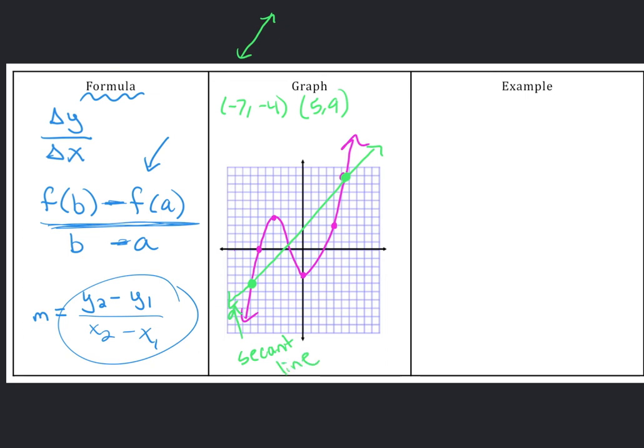And two ways to find that average rate of change. If we're using that formula, change in y. So subtracting those y values, 9 minus negative 4, which is the same as 9 plus 4. And then subtracting those x values, 5 minus negative 7, which is the same as 5 plus 7.